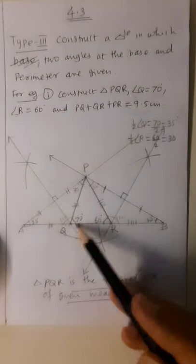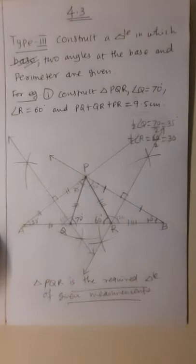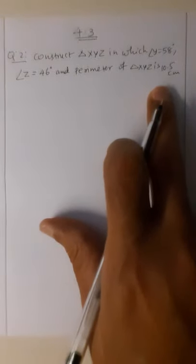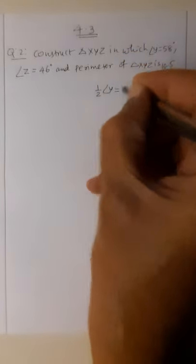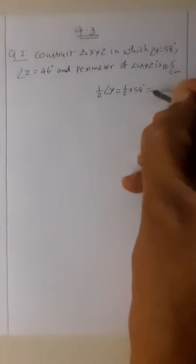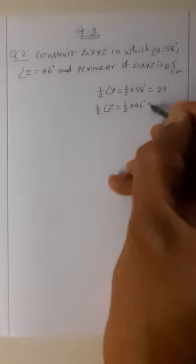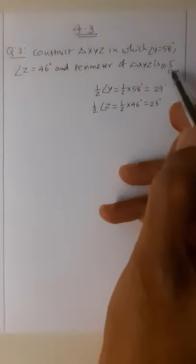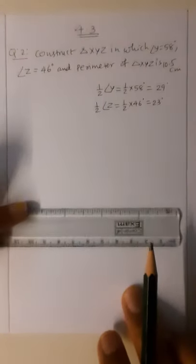In this type of construction we are given the perimeter of the triangle and two base angles. Now the second sum of Practice Set 4.3: construct triangle XYZ where angle Y is 58 degrees, angle Z is 46 degrees, and the perimeter is 10.5 centimeter. Half of angle Y is 29 degrees, and half of angle Z is 23 degrees.